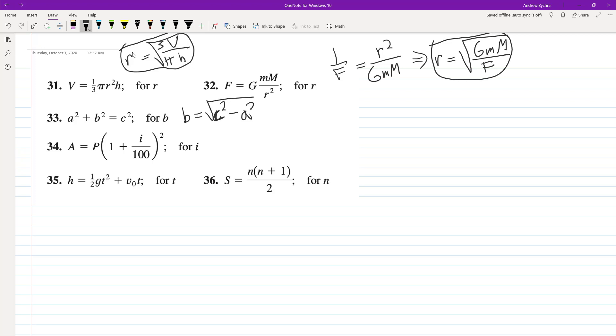Interest problem, solve for I. So first thing we'll do is divide A by P, so A/P = (1 + I/100)².